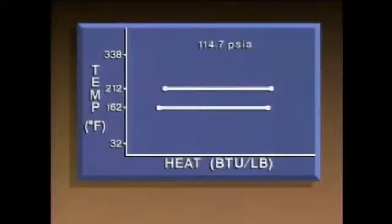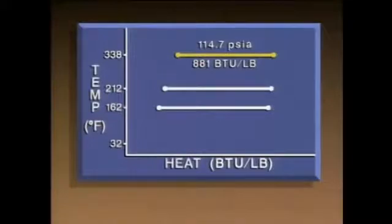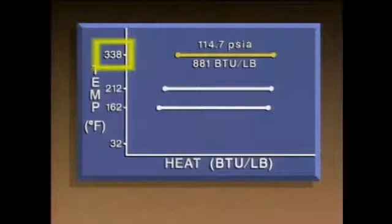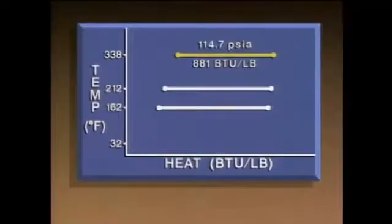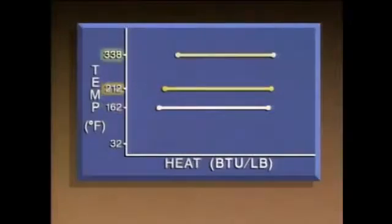Now let's look at a pressure higher than atmospheric. At 114.7 PSIA, water won't boil until it reaches 338 degrees Fahrenheit. Under these conditions, the latent heat of vaporization is about 881 BTUs per pound — less than at atmospheric pressure. At higher temperatures, water molecules move more quickly, so it's easier for them to escape as steam. In other words, it takes less heat to change the water completely to steam. As the pressure and boiling temperature of water increase, the latent heat of vaporization decreases.